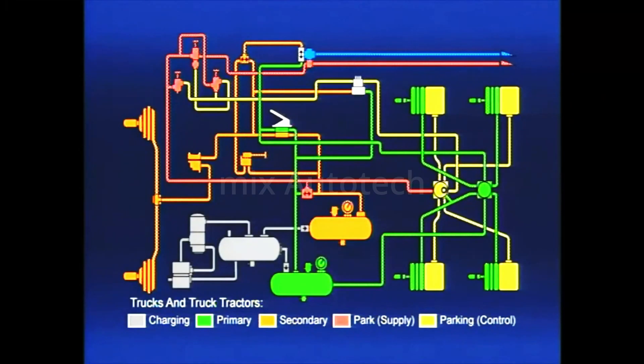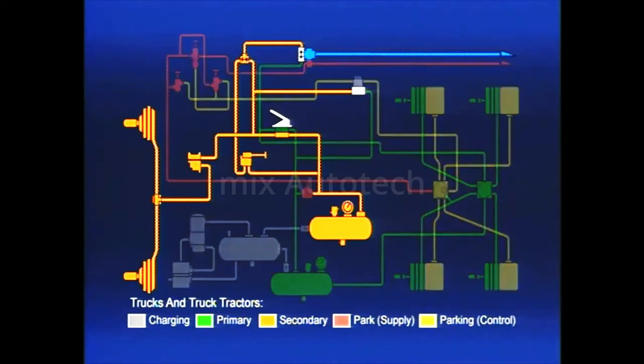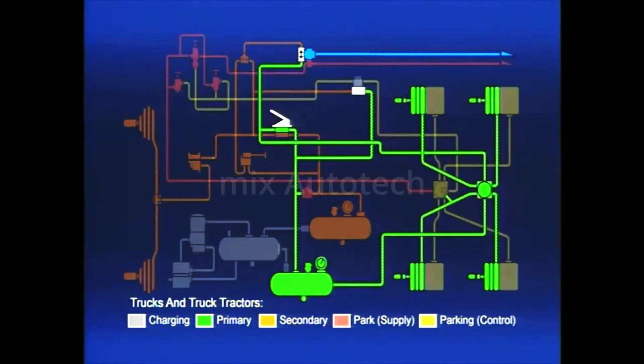We learned in part two that vehicles are equipped with dual brake systems, a protected braking circuit for the front axle brakes and a separate circuit for the rear.